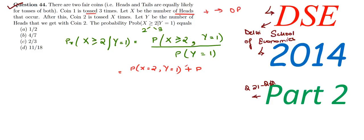Either we can get two heads or we can get three heads. We cannot get two heads and three heads both together in coin 1 when we toss three times. So we will add a plus — that is, either two heads or three heads. So X equals 2 and Y equals 1, or X equals 3 and Y equals 1.